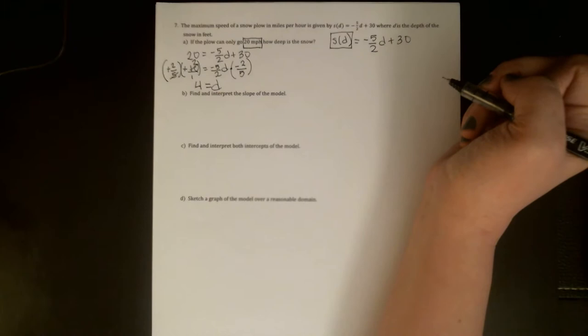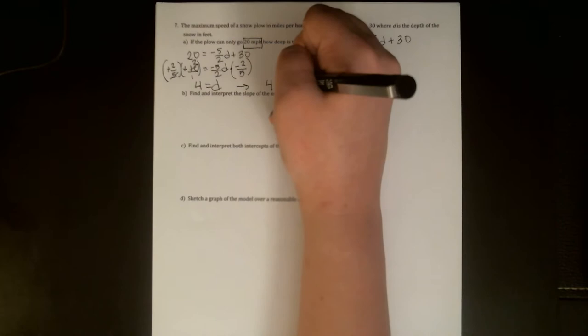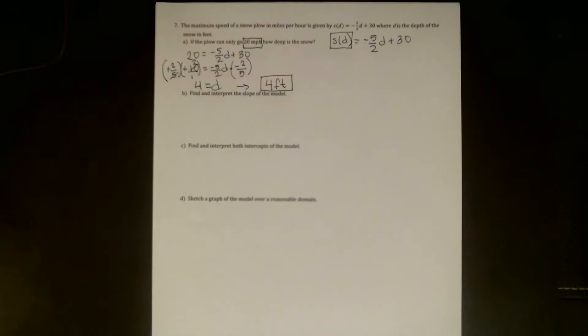Negative 5 halves is attached by multiplication. So the appropriate way to get rid of it would be to divide by negative 5 halves. But dividing by a fraction is exactly the same as multiplying by its reciprocal. So I'm going to multiply both sides by negative 2 fifths. We can simplify. The negative signs cancel out. We're left with 2 times 2, which is 4. So to give our answer, if the plow can only go 20 miles per hour, if that's its maximum speed, then the snow must be 4 feet deep.